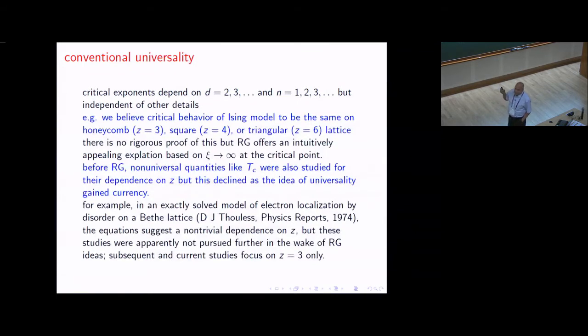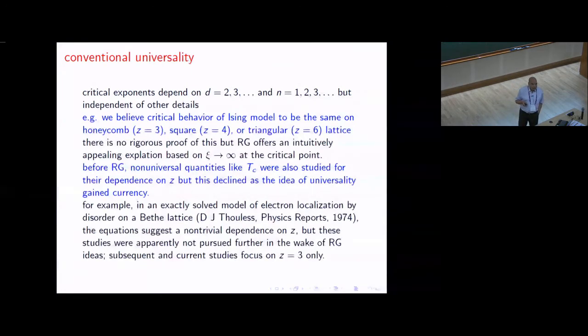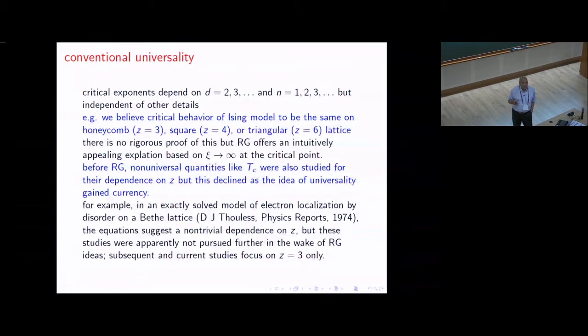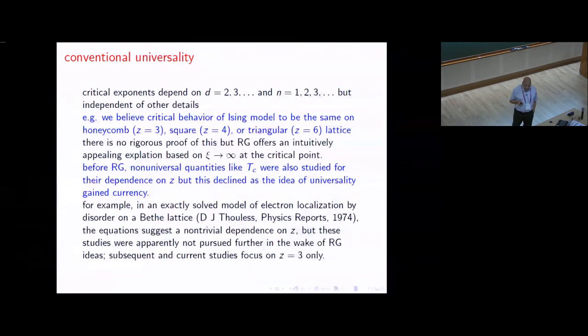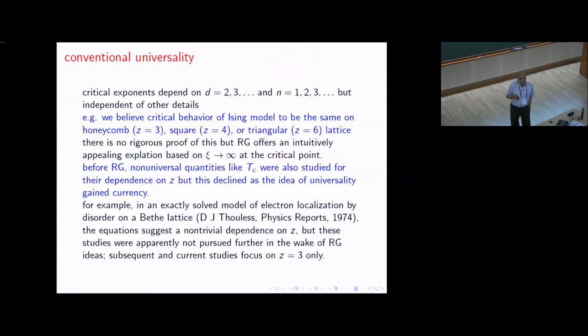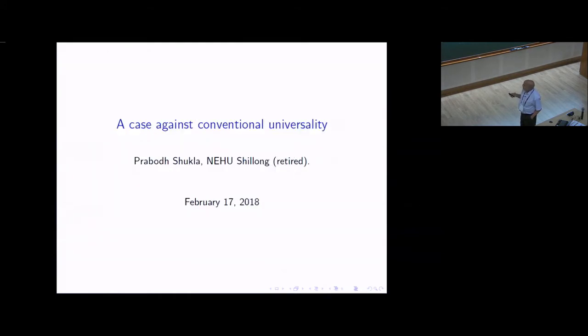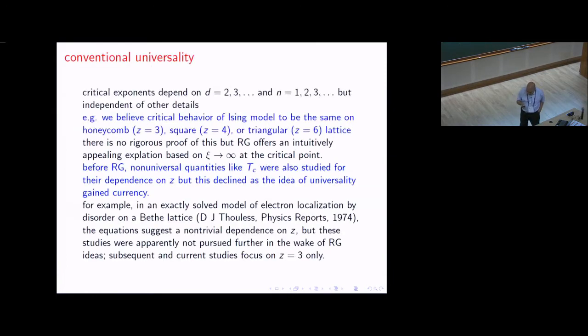Before that, about 50 years ago when I was looking for a PhD problem, renormalization group was just emerging and there was another beautiful problem—the problem of electron localization had been solved exactly. Even now that's the only exact solution available on a Bethe lattice. The equations were very complicated, and people were trying to study how the coordination number of a Bethe lattice affects the localization. Somehow that problem was never settled and was just abandoned.